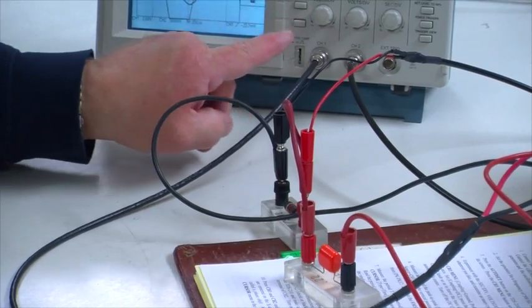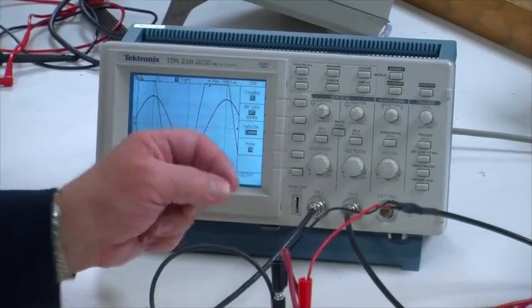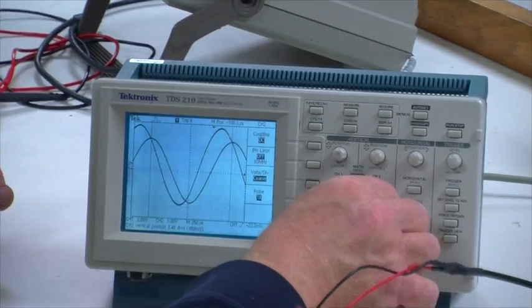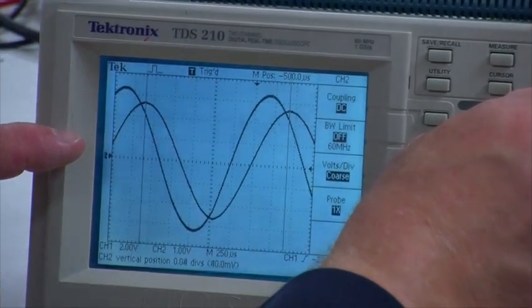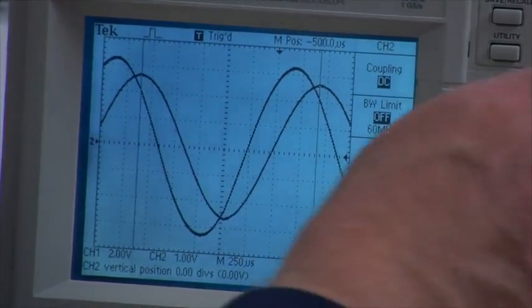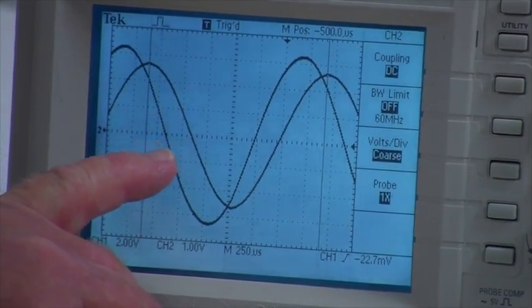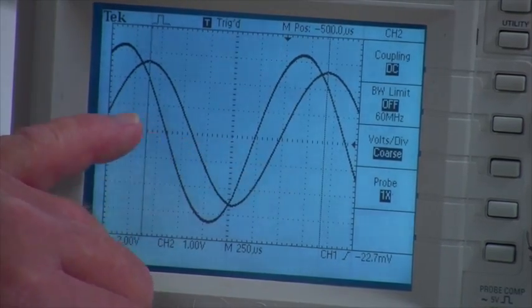Let me turn on channel two. It's amplified a little too high, so let me bring it down. I'll adjust it so that channel two is also aligned exactly with the x-axis.